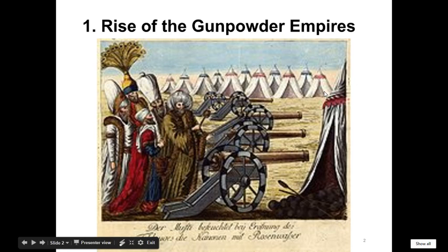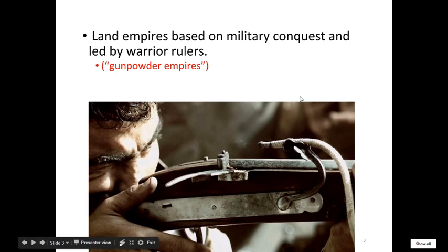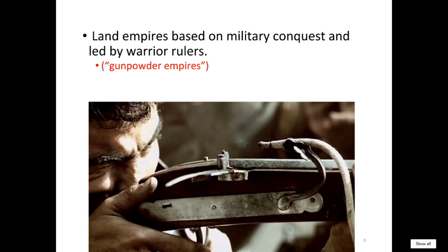These three empires all have a similar origin — they're all land-based empires, so they're going to be different than the maritime empires that the Europeans are developing during this time. These empires are kind of like the continuation of earlier empires, like the Mongol empires or the Islamic caliphates. They're going to incorporate new technologies — gunpowder weapons like muskets and cannons — and use these to conquer and expand throughout the Middle East, the Mediterranean, and Southern Asia, throughout India.